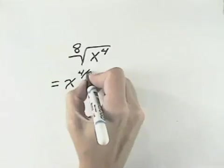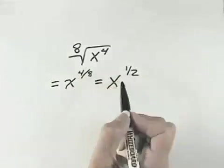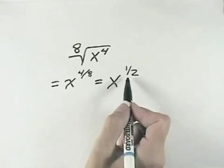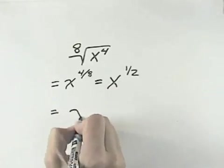So we have x to the 4 over 8, and we can simplify 4 and 8 to be x to the 1 half. However, because that's still rational in terms of our exponent, we want to rewrite this in radical form.